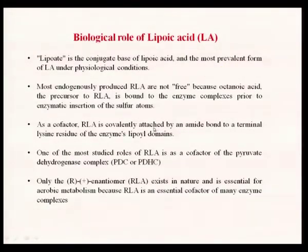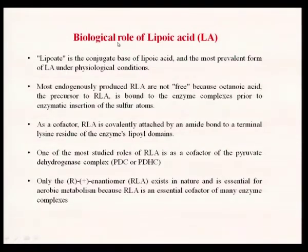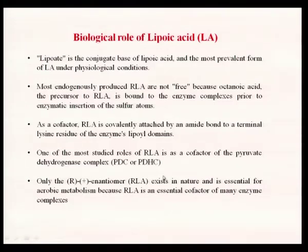Now we will look at the biological role of lipoic acid. It exists as the conjugate base called lipoate under physiological conditions because it is deprotonated at physiological pH. Endogenously produced R-LA is not free — octanoic acid, the precursor of R-LA, is bound to the enzyme complex prior to enzymatic insertion of the sulfur atom. The R-LA does not exist in the free form; it is normally complexed along with other proteins and is most likely closely associated with lysine.